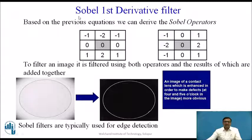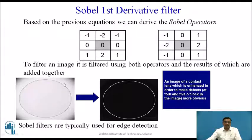Based on the previous equation, we can derive the Sobel operator. For the derivative in the x direction we use one filter, and for the y direction we use another filter. To filter an image, it is processed using both operators — x direction and y direction — and the results are added together. Looking at the input image, we get the output by adding the processed images with gradient in x and y directions, giving an enhanced image of a contact lens, making defects more obvious. Sobel filters are typically used for edge detection.